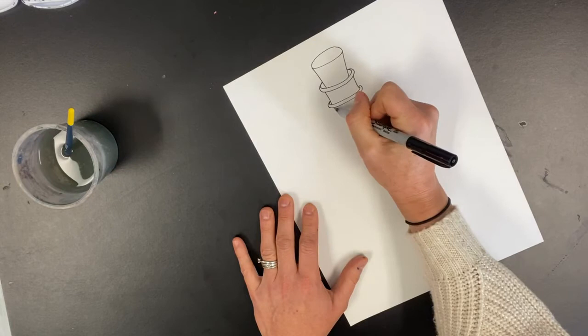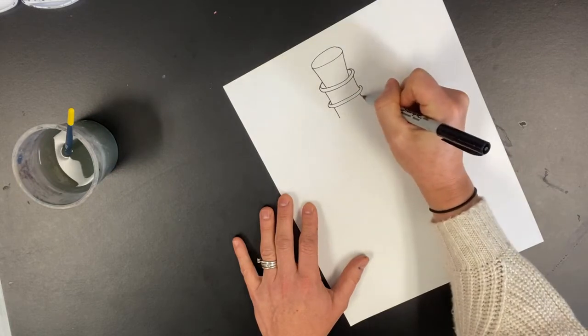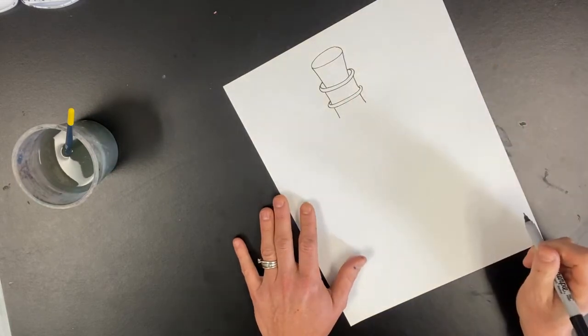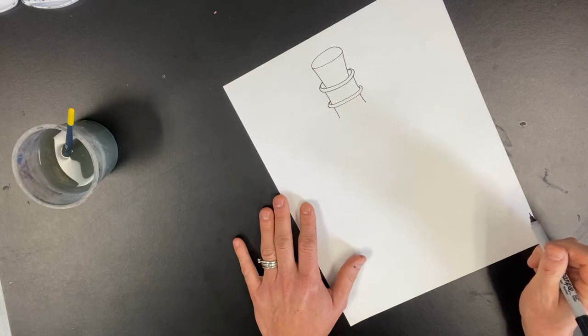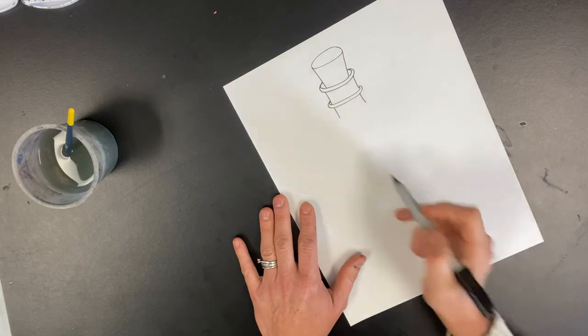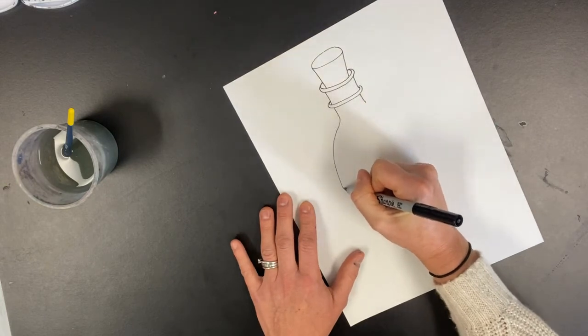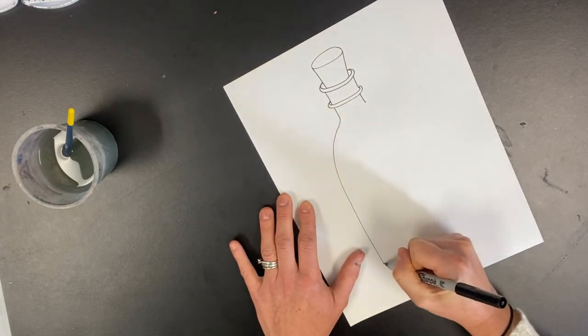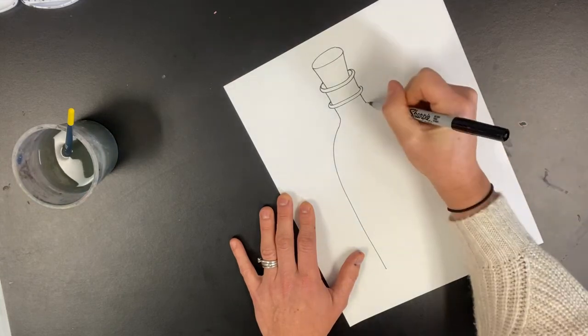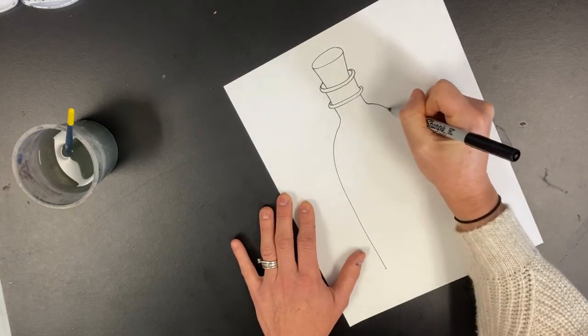And I'm going to do another smaller lip just for some decoration. And then I'm going to draw the sides of my bottle. Think of that word symmetrical, the same on both sides. Now I'm going to take this side and I'm going to bring it down. And I'm going to take this side and do the same thing.